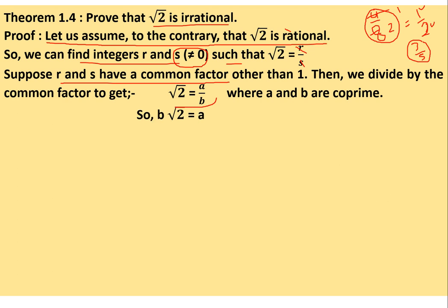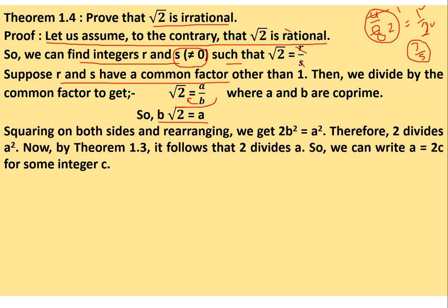Now we multiply both sides by b: b√2 = a. Then squaring both sides and rearranging gives 2b² = a², therefore 2 divides a². Why? Because 2 appears in the factorization of a². Just as 3 divides 12 because 3 is in 12's factorization, here 2 is in a²'s factorization, so we say 2 divides a².